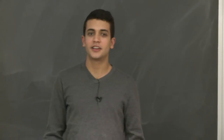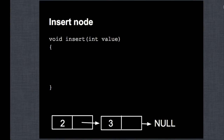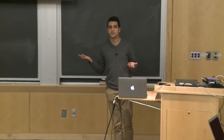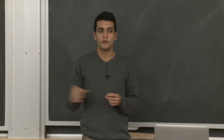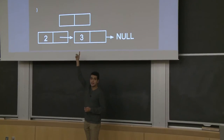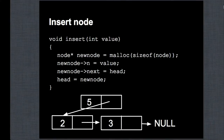Now let's see what we should do to insert an element into a linked list. The insert function will be of type void. First, malloc a new node. In our implementations, we keep the head as a global variable, so we can make this new node the new head pointing to the previous head. We set new_node->n to the value passed to the function, then new_node->next equals head, and finally head equals new_node.